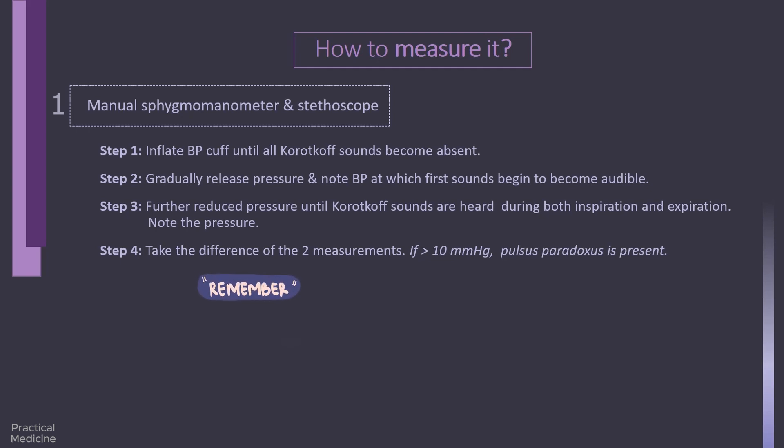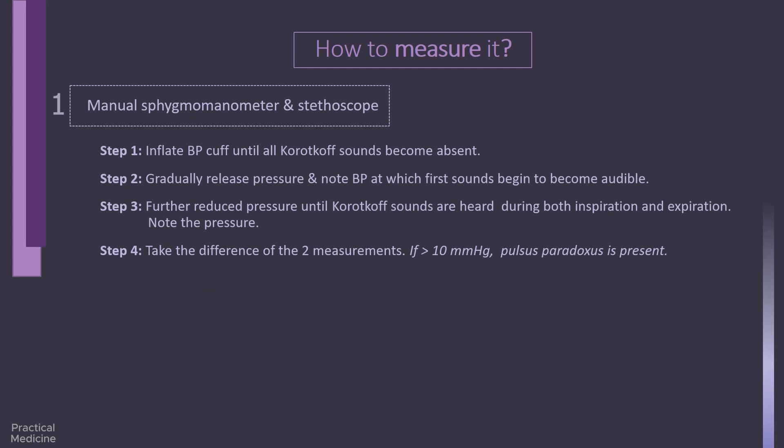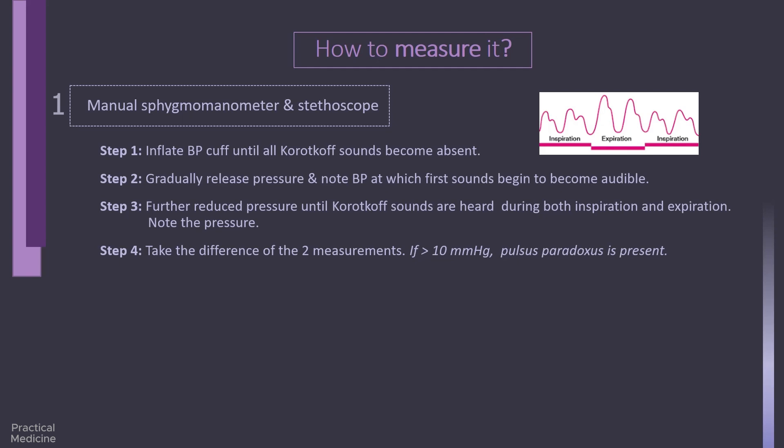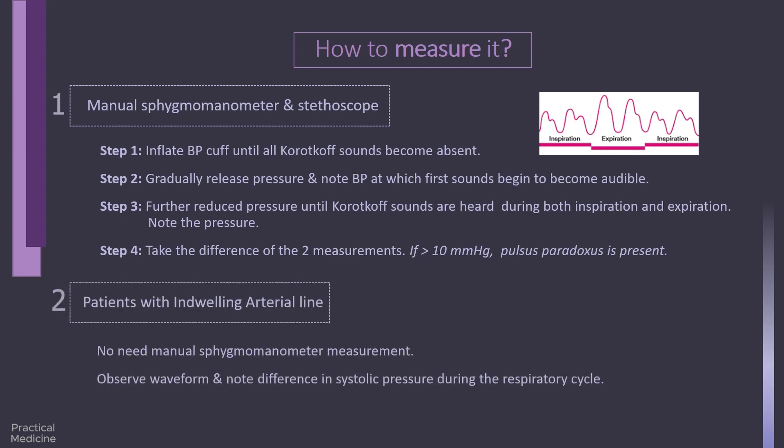An important tip when assessing for pulsus paradoxus is to ensure normal tidal volume breathing in the patient. Do not instruct them to change their breathing pattern, as the depth of respiration influences the magnitude of pulsus paradoxus and will be amplified in patients with pulmonary disease. It shall be noted that severe pulsus paradoxus may also be appreciated as a weakening or even disappearance of the palpated pulse during inspiration. Under certain circumstances, you may also be able to note it in the patient's pulse oximetry waveform during different respiratory phases. For patients with indwelling arterial access, measuring pulsus paradoxus is simply done by watching the waveform and noting the difference in systolic pressure during the respiratory cycle.